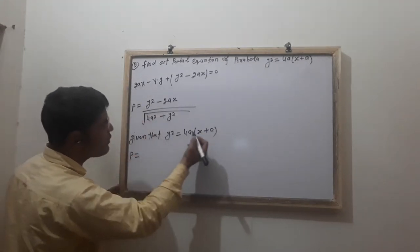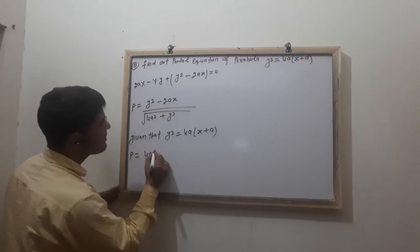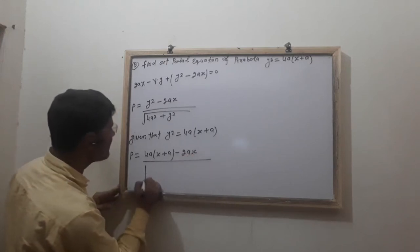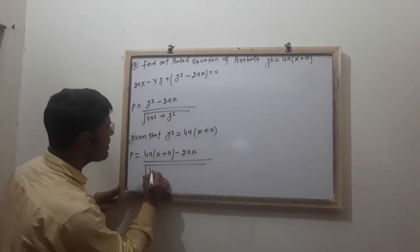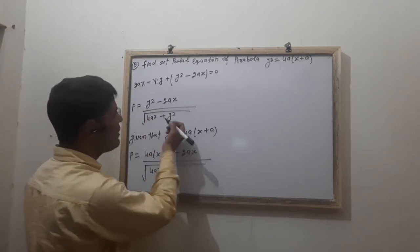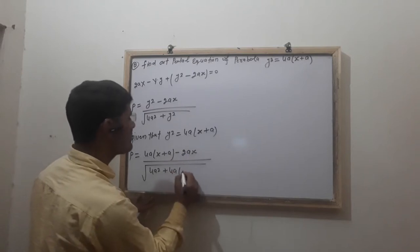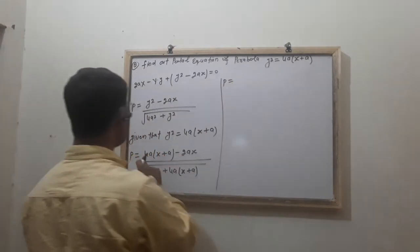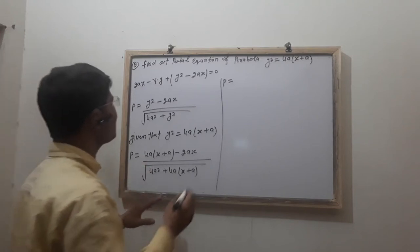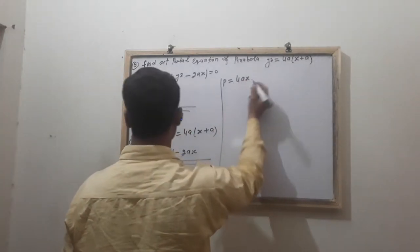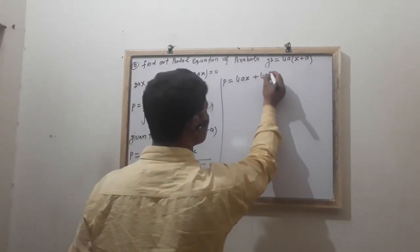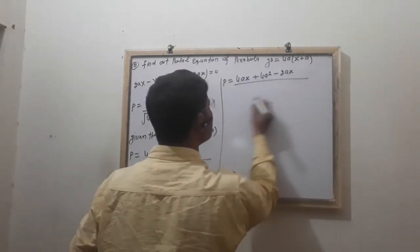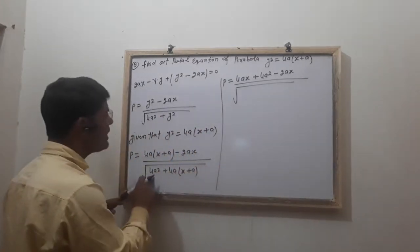P is equal to the value of Y square, which is 4AX plus A, minus 2AX, divided by under the root of 4A square plus Y square, where Y square equals 4AX plus A. This simplifies to 4AX plus A minus 2AX divided by under the root of 4A square plus 4AX plus A.